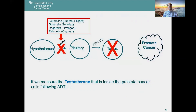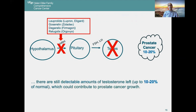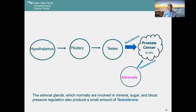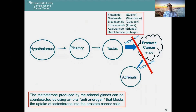Interestingly, if we measure the testosterone inside prostate cancer cells after ADT by whatever drug you choose, there are still detectable amounts of testosterone remaining — up to 10 to 20 percent of normal — which can and do contribute to prostate cancer growth. The adrenal glands, which normally are involved in mineral, sugar, and blood pressure regulation, also produce a small amount of testosterone. There are a couple of ways of dealing with this residual testosterone.